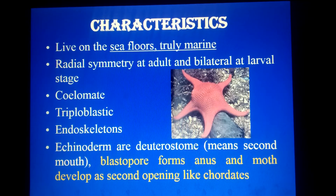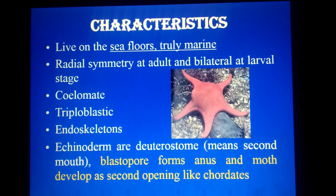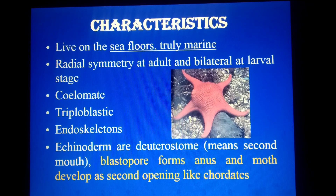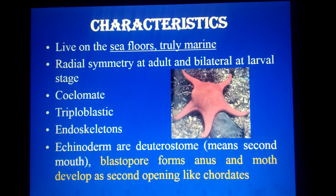Now for the characteristics. First, habitat: they live on the sea floor. They are called echinoderms because they have spines on their skin and they also have an endoskeleton. These animals are truly marine — they are not found in fresh water.